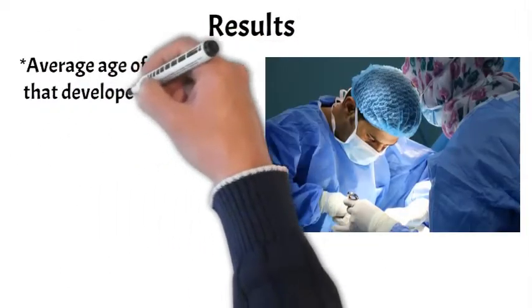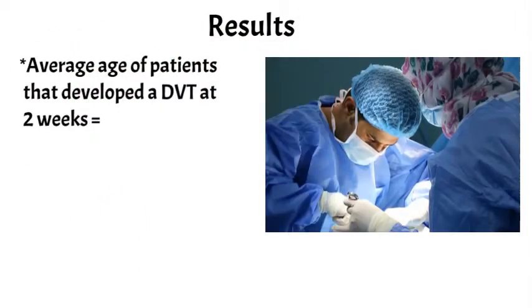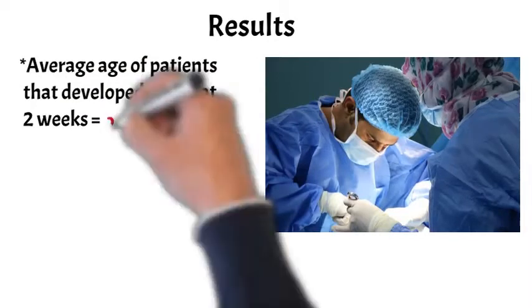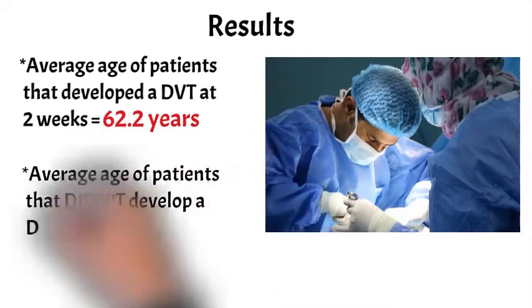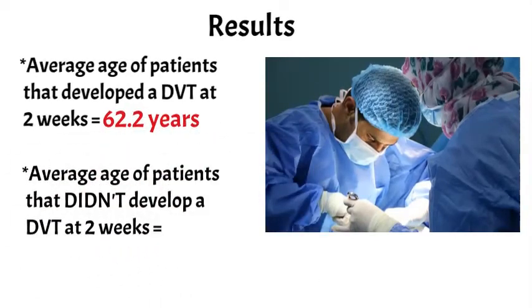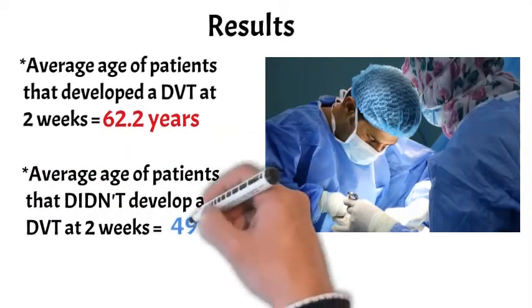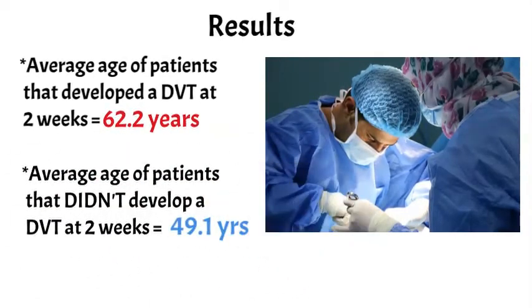In terms of other results, the age of the patient made a difference. If you had a clot at the two-week mark, your average age was around 62 years. If you didn't have a clot at the two-week mark, your average age was around 49 years. This suggests that the older you are, the higher your risk of developing a clot following these types of surgery.